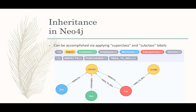The last topic is inheritance in Neo4j, and this is where Neo4j can shine — unlike ternary relationships. The way you do it is by applying superclass and subclass labels. When you make nodes, you can give them multiple labels. Here we have two cars in yellow — they are cars, but they are also vehicles, so those nodes carry both labels. We also have three versions of Bob: Bob the mechanic, Bob the customer, and Bob the salesperson. The mechanic and salesperson are both employees, while the customer is not.